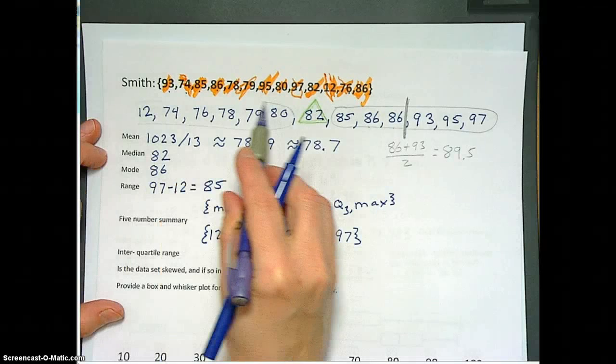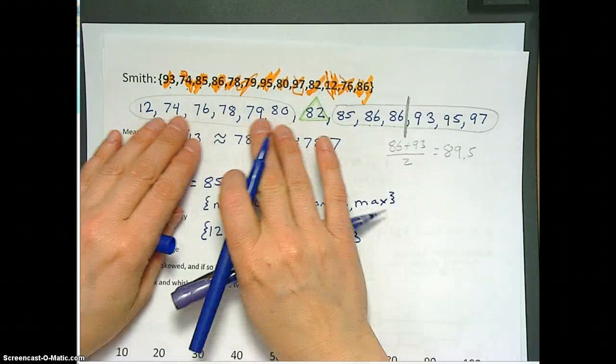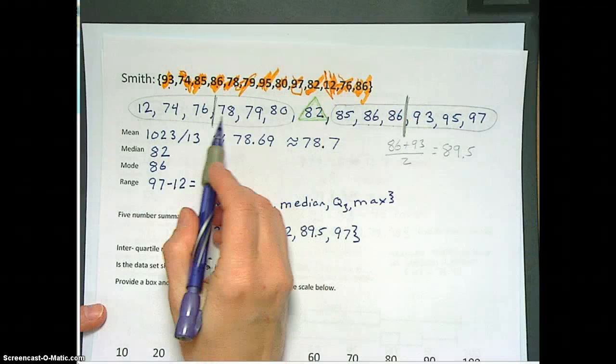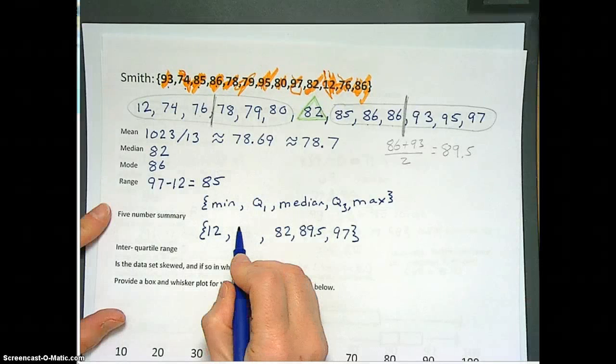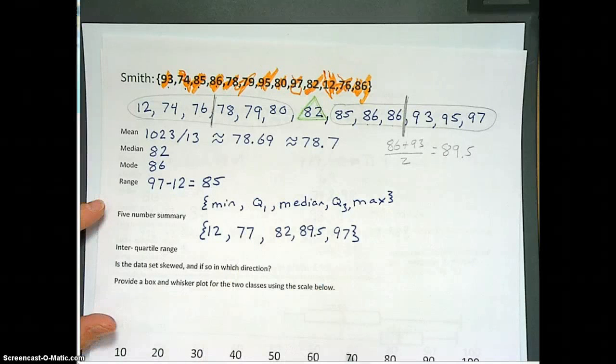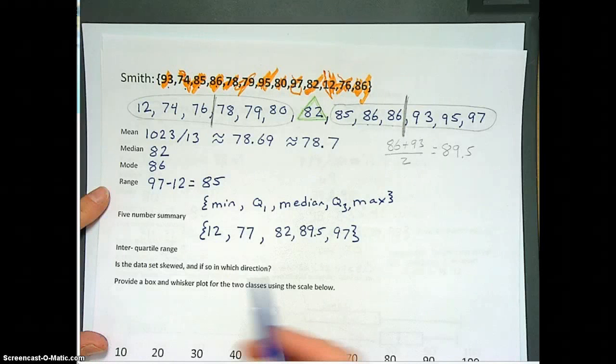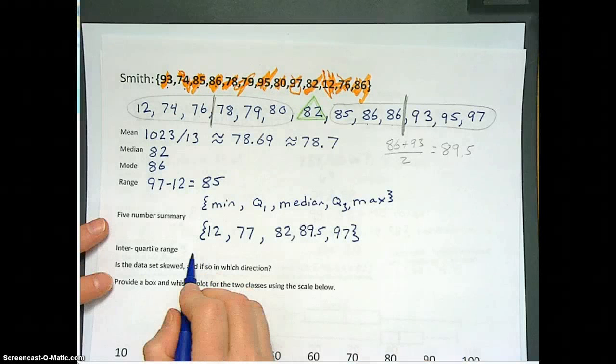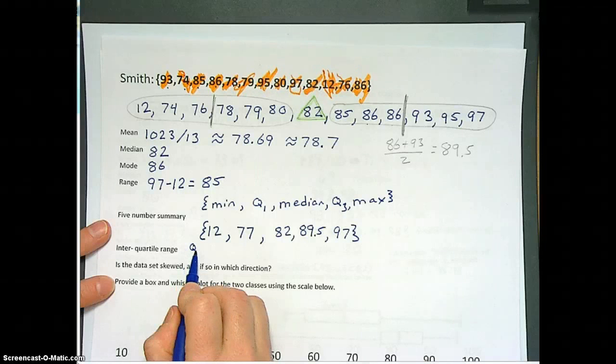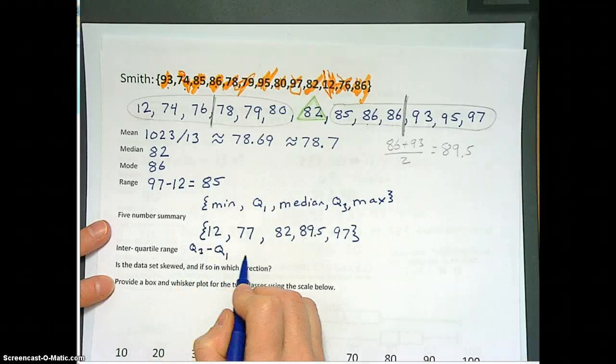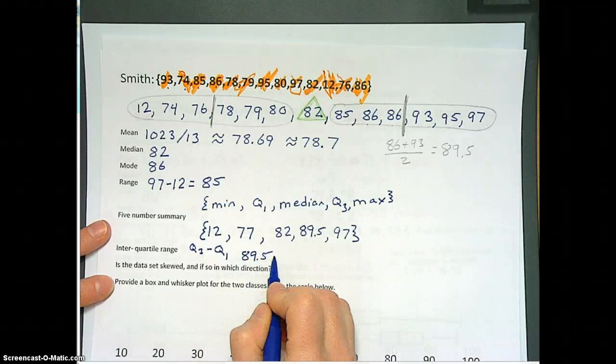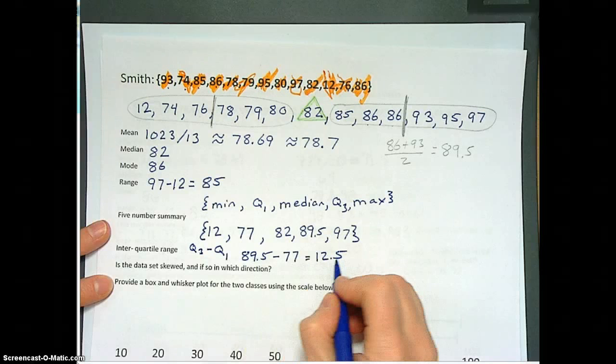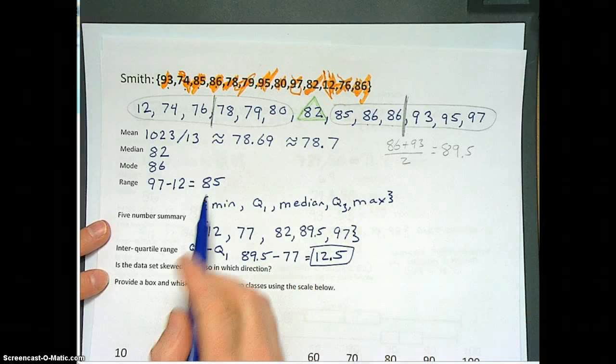And then we'll look to find the Q1. Here's the lower half, which also has the six data points. So right in here is the middle of those six data points. Between 76 and 78, most of you can see that that quartile would be a 77. Now we have those things written down, and we need the interquartile range, which is the width of that box in the box and whisker plot, where the middle 50% of your data lie. So that is Q3 minus Q1, which is 89.5 minus 77. So that's 12.5. So 50% of the class had a range of scores that was 12.5 points wide.